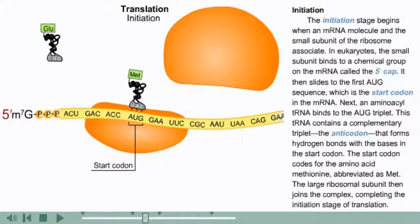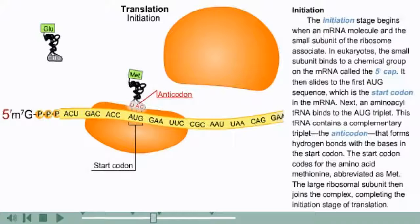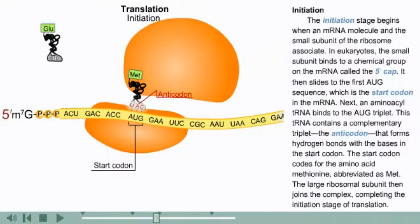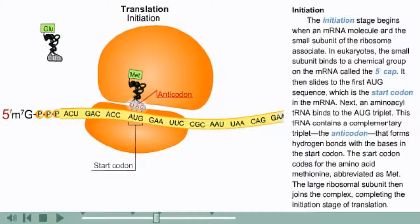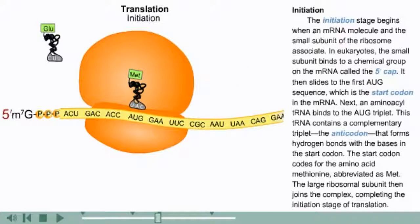Next, an aminoacyl tRNA binds to the AUG triplet. This tRNA contains a complementary triplet, the anticodon, that forms hydrogen bonds with the bases in the start codon. The start codon codes for the amino acid methionine, abbreviated as MET. The large ribosomal subunit then joins the complex, completing the initiation stage of translation.